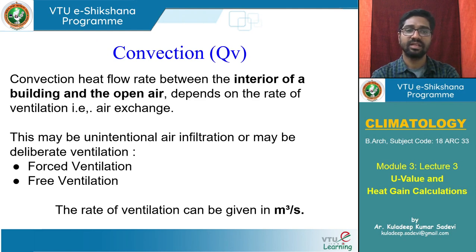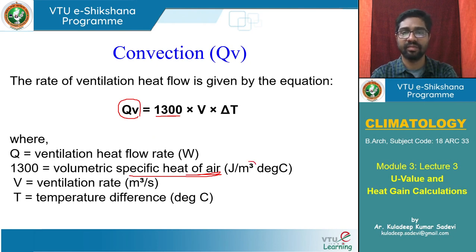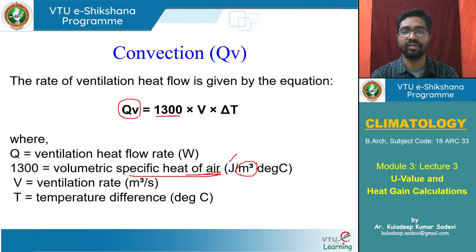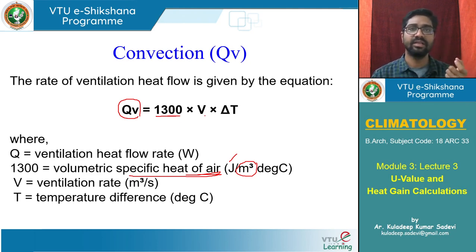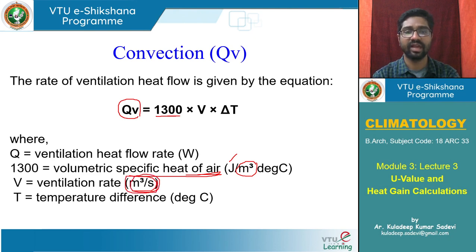For convection heat gain or heat loss, the total heat flow through ventilation is 1300 (volumetric specific heat of air) multiplied by volume of air moving multiplied by temperature change from outside to inside. The 1300 J/m³·°C is the amount of heat required to change the temperature of 1 cubic meter of air by 1 degree. If we know the ventilation rate (volume per second) and the temperature difference, we can calculate the heat added by convection.